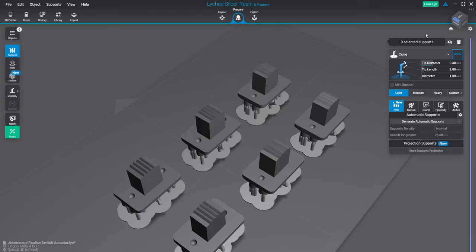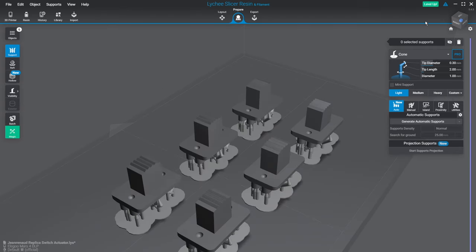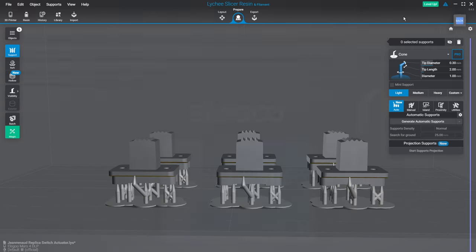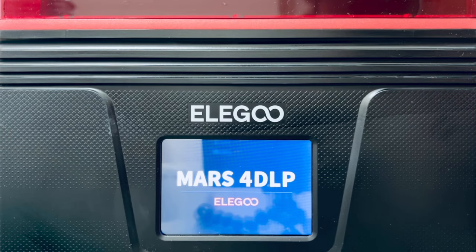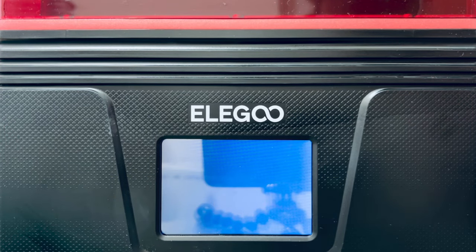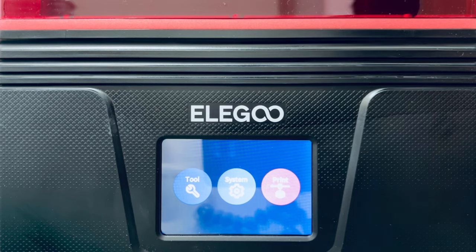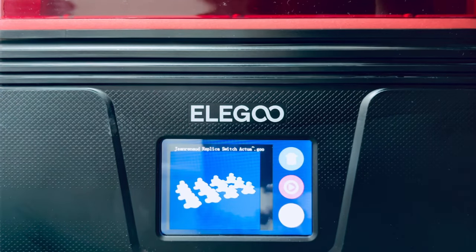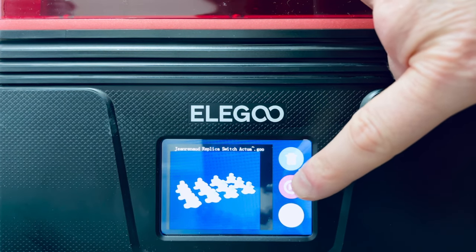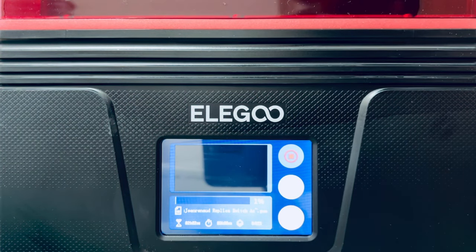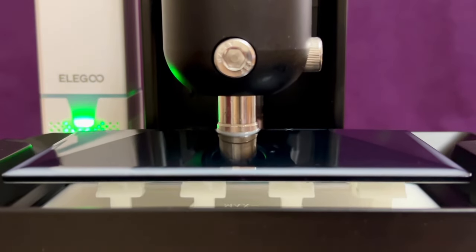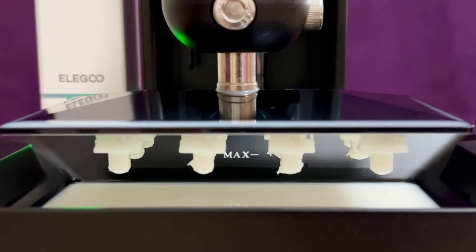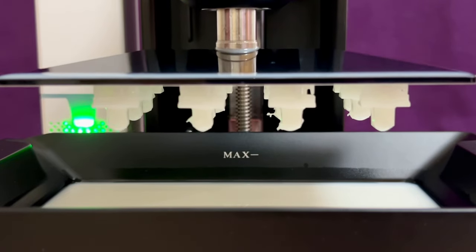One advantage of SLA 3D resin printing is that multiple objects can be printed in the same time as single objects, so it's advantageous to fill the build plate area with a practical maximum quantity of objects. I'm illustrating 6 objects in this sequence, but ultimately I printed batches of 12. This batch of 12 actuators, just emerging from the resin vat, took about 3 hours to print.